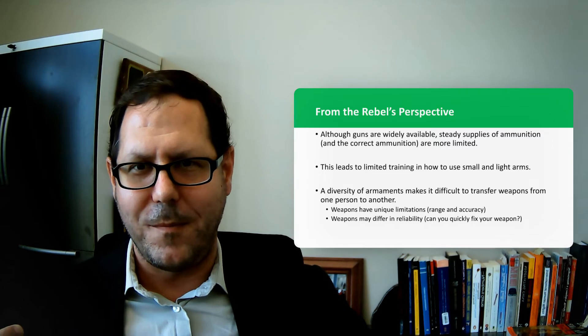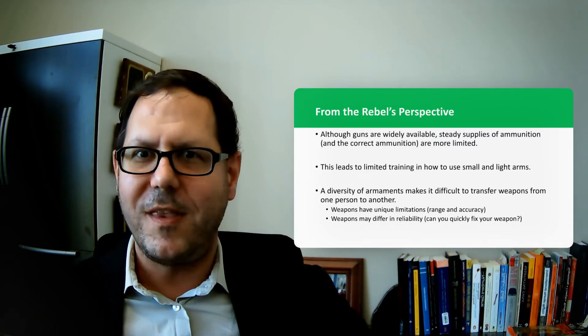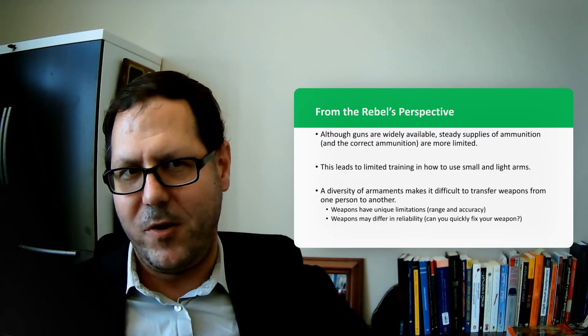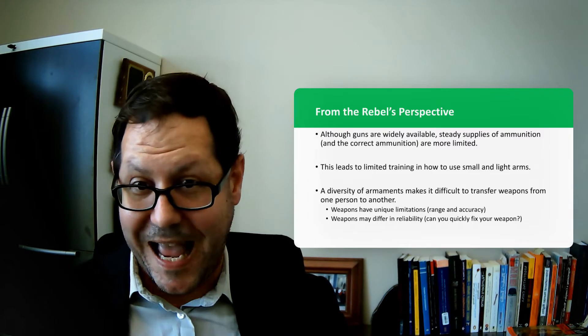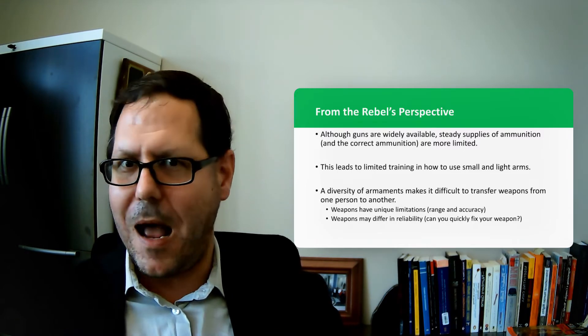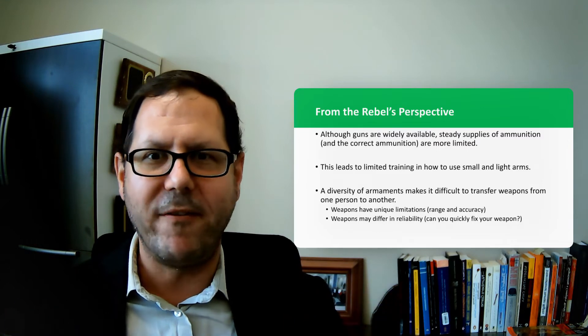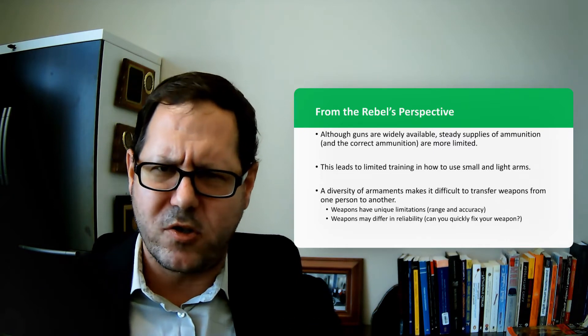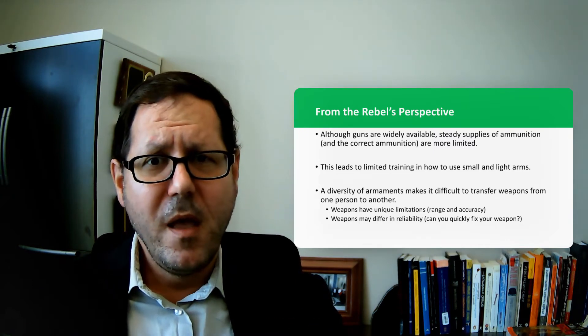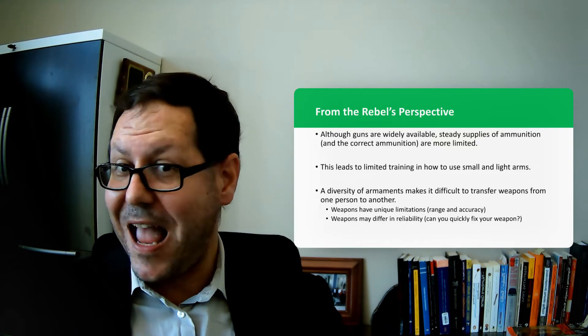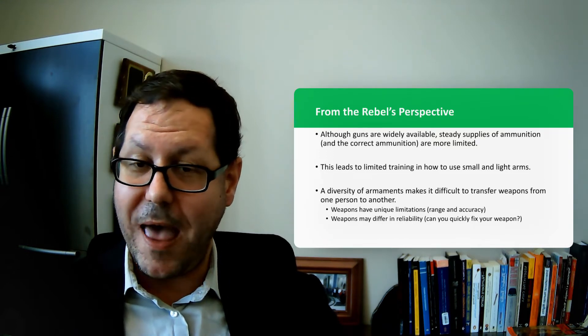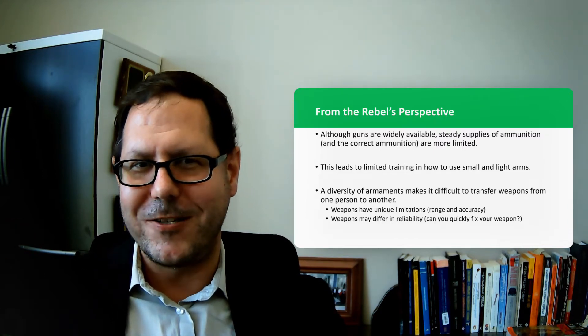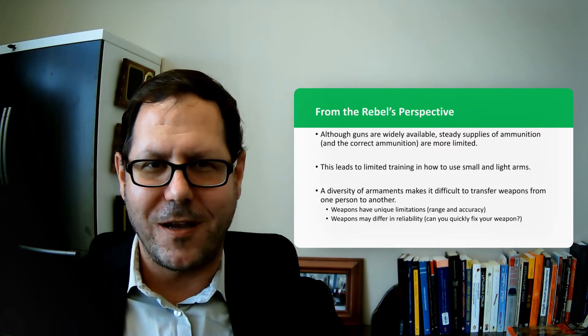The acquisition process and the support process for these weapons looks very different if you are a rebel group. You are scrounging up what you can get and what you're bringing together may not match up. You may have a wide variety of different types of weapons that require different kinds of knowledge about how they work, to service them and maintain them. They may require different kinds of ammunition and you may not have ready access to that ammunition. The ammunition that you have may not fit the guns that you have, and as a result, those guns essentially are useless until you're able to acquire additional ammunition.